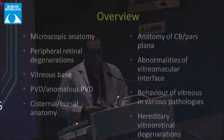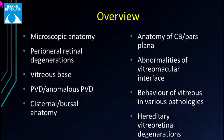We'll be talking about the surgical anatomy of the vitreous. Here's an overview: we'll start with microscopic anatomy, discuss peripheral retinal degenerations and the vitreous base, talk about PVD and anomalous PVD, the cisternal and bursal anatomy, anatomy of the pars plana and ciliary body, abnormalities of the vitreo-macular interface, how the vitreous behaves in various vitreo-retinal pathologies, and hereditary vitreo-retinal degenerations.